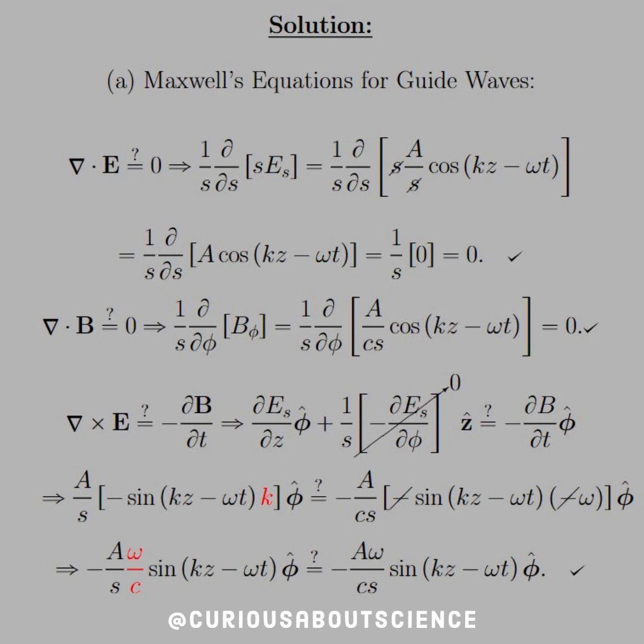And, we have to chain rule, so we get a k there. Now, the time derivative of B, well, that gives us a factor of omega, negative omega due to chain rule, but also the cosine goes to negative sine. So, we have negatives that cancel. So, on both sides, we have a negative, that's good.